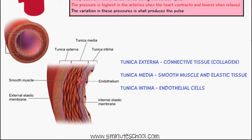We have tunica media, which is this region here, which consists of smooth muscle and elastic tissue. And we have this region here called tunica intima, which consists of endothelial cells, and this is what's in contact with the blood.